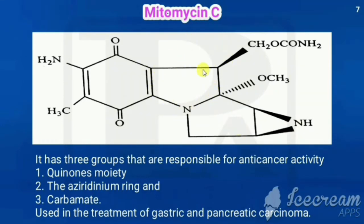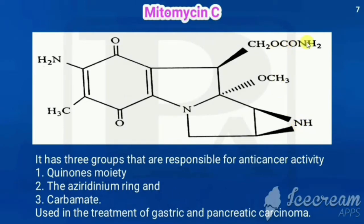Three moieties are responsible for anti-cancer activity: the first is the quinone moiety, the second is the azeridinium ring — a three-membered heterocyclic ring with nitrogen as the heteroatom — and the third is the carbamate group. These three are responsible for anti-cancer activity. This drug is used in the treatment of gastric and pancreatic carcinoma.